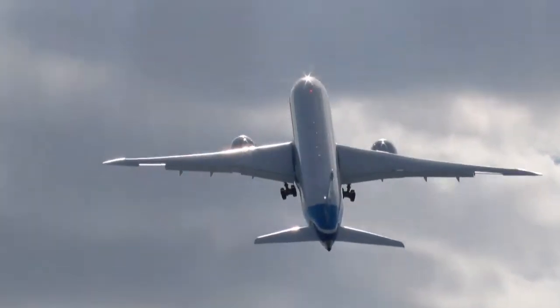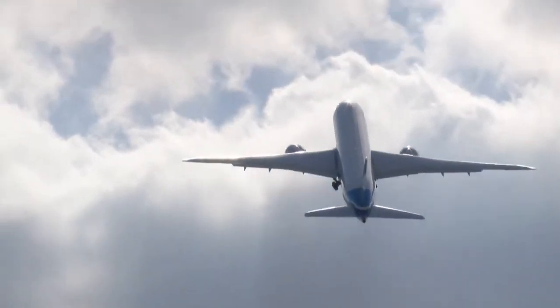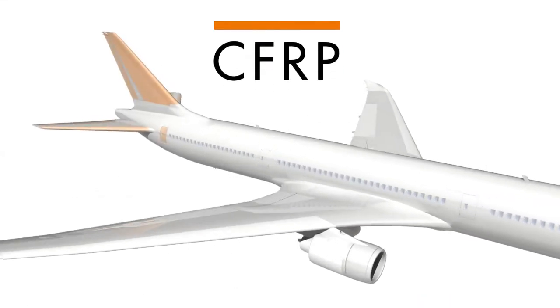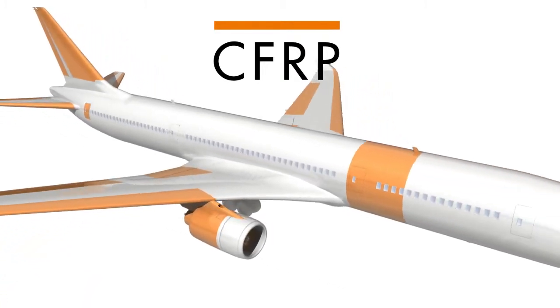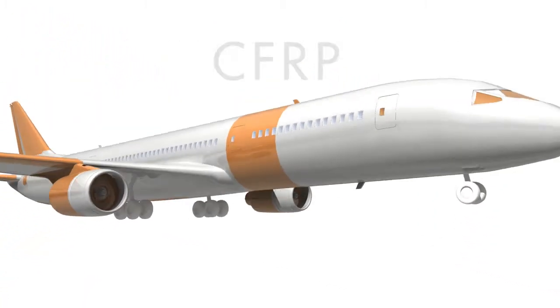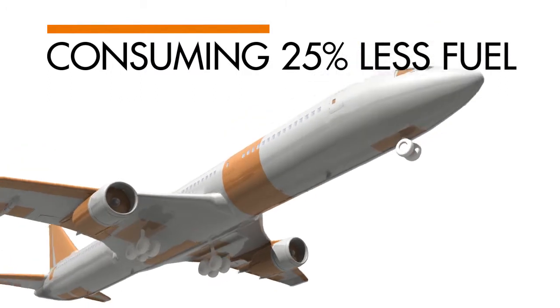In the skies today, there's a new generation of aircraft built using carbon fiber reinforced polymer composites. These are stronger, tougher, and above all lighter materials than the metals they replace, creating much more fuel efficient aircraft.